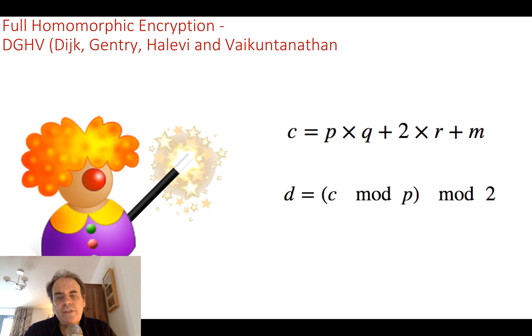So the way that DGHV works is that we take the message, which is an M value. That's a single bit, a zero or a one. Then we take our random values, and that's an R and a Q. So we generate these values, and then P becomes our private key. To decipher on the other side, we take our cipher, and we apply it mod P. And we take the mod of 2 of that, that deciphers.